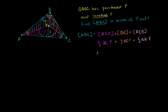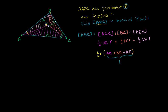Factoring out one-half R gives us one-half R times (AC plus BC plus AB). And what is AC plus BC plus AB? That's the perimeter P — it's just the sum of the sides. So the expression becomes one-half R times P.